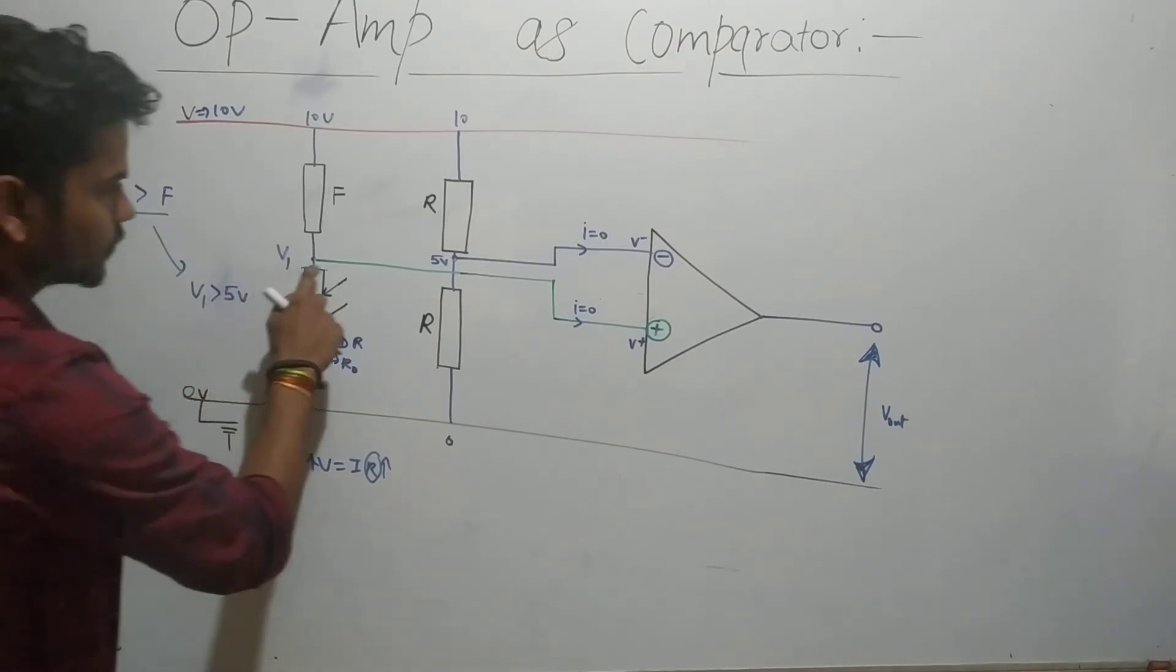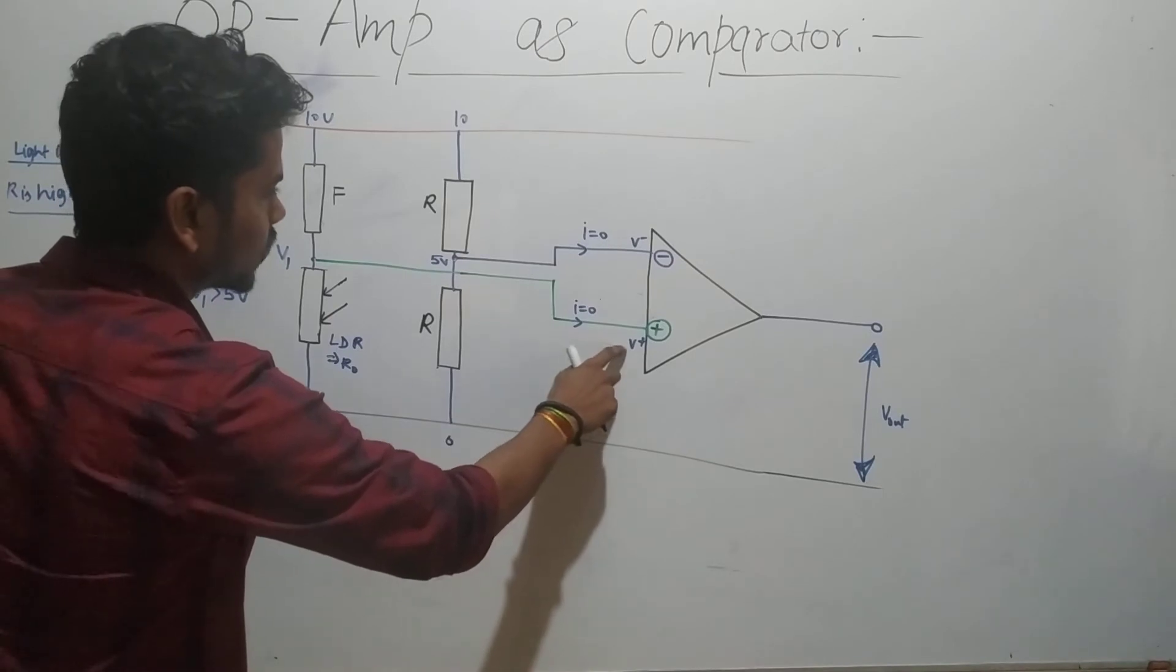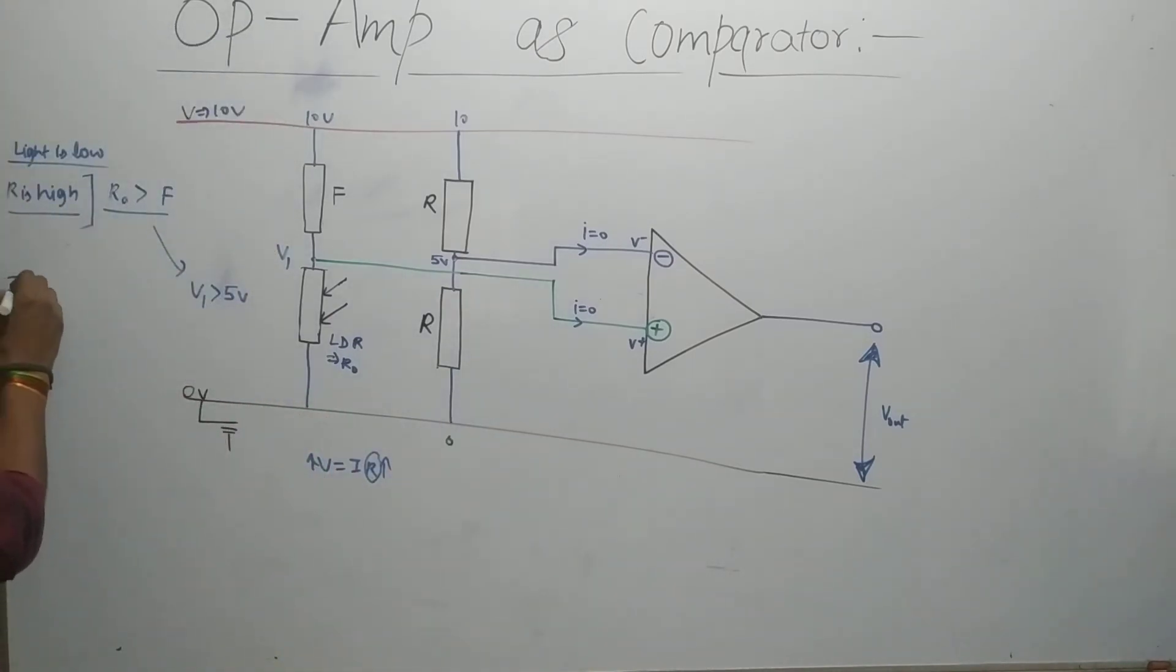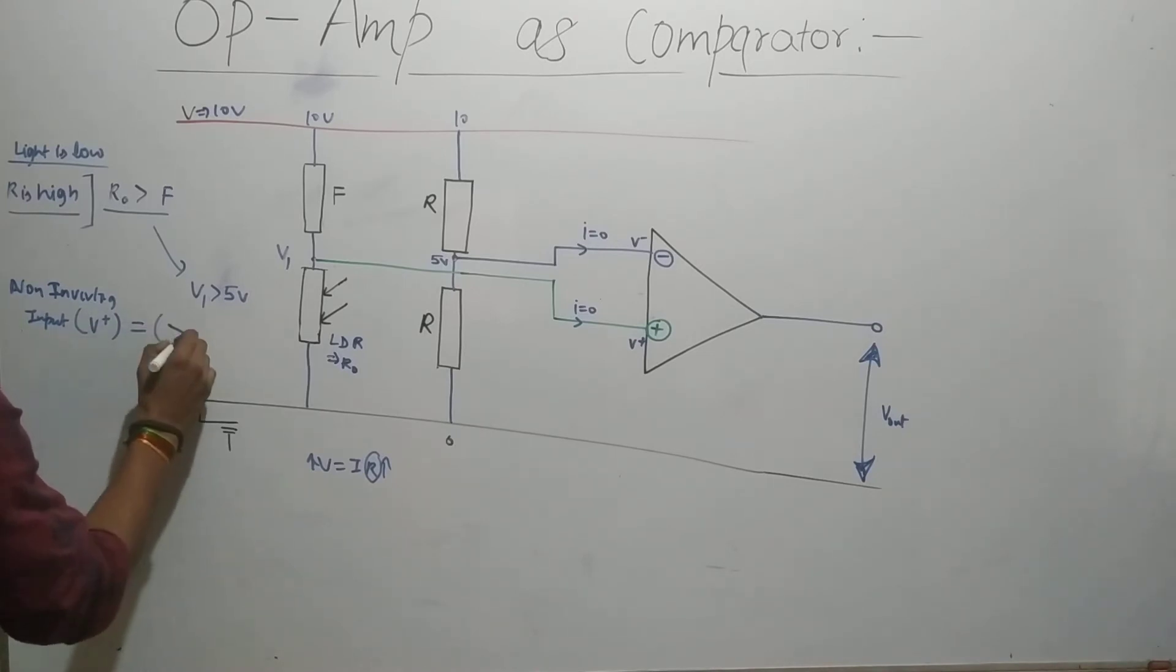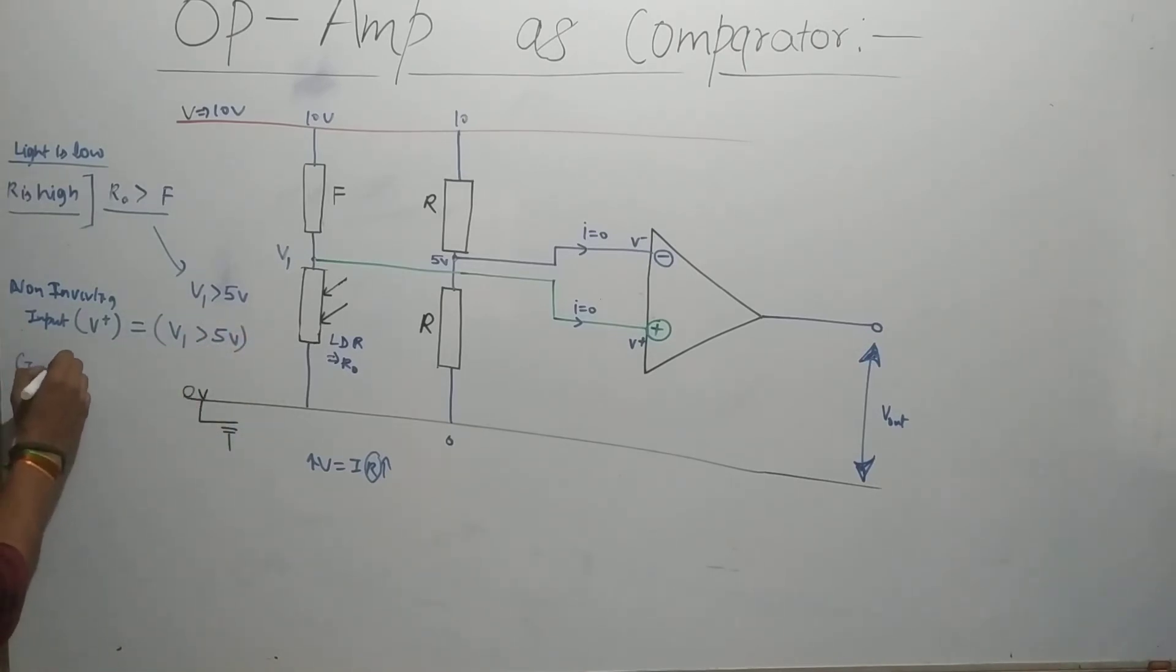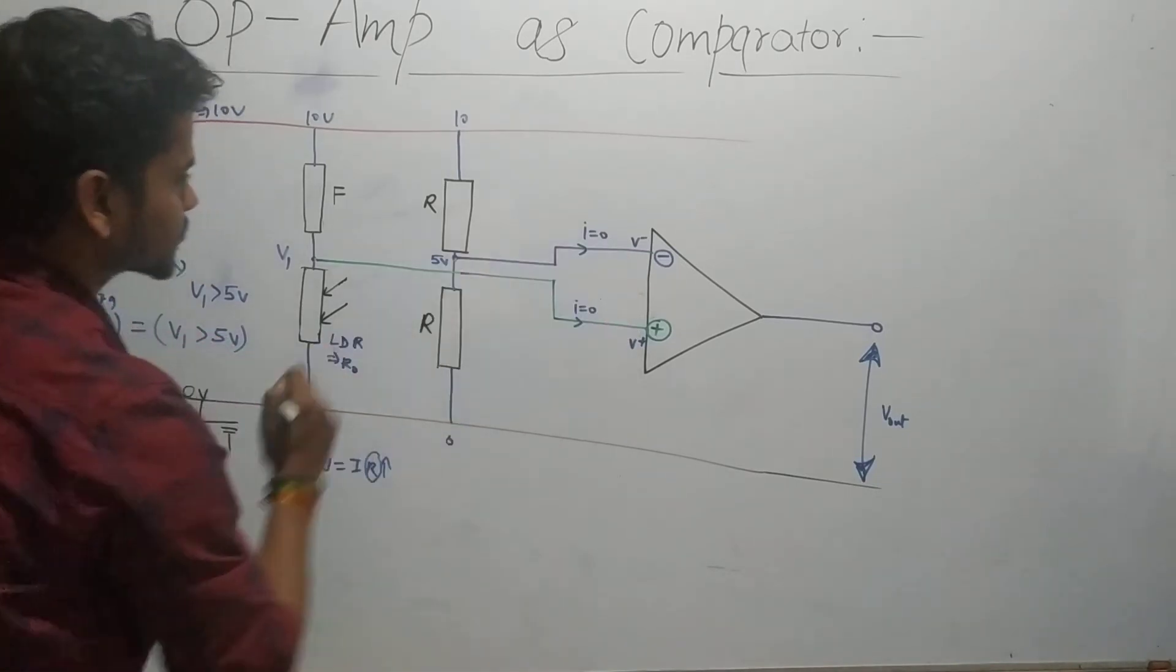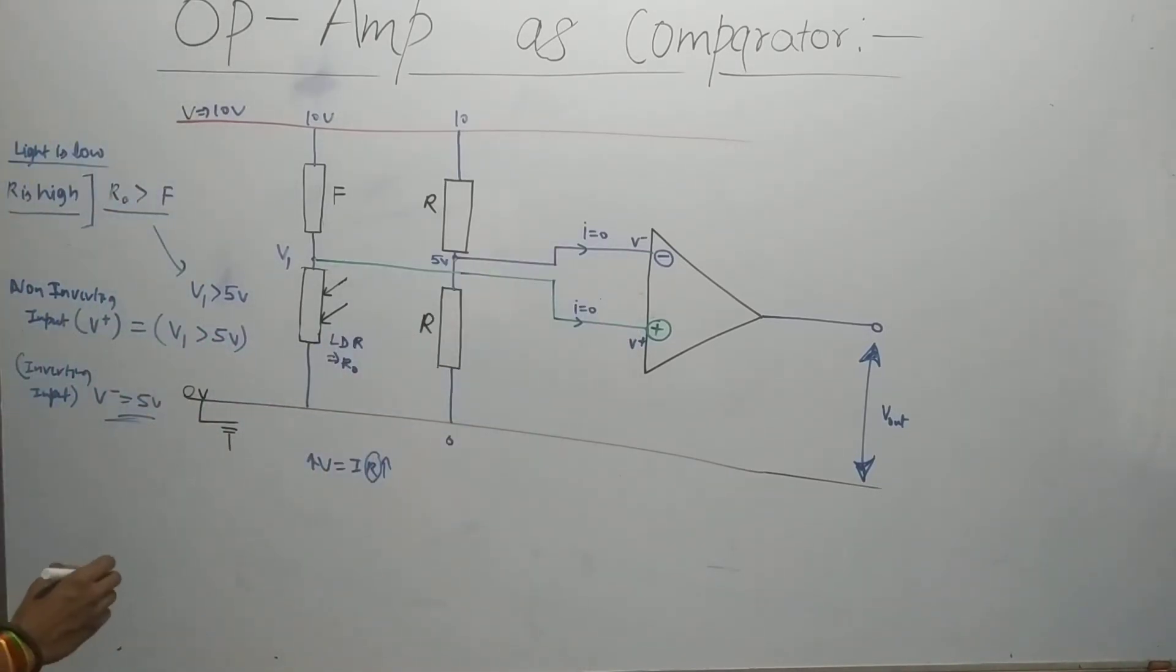So if V+ is greater than 5, you can see that V+ is at this point. We have the inverting input and non-inverting input. The non-inverting input V+ is greater than 5, and the inverting input V- is 5.